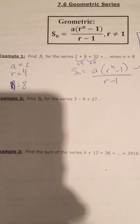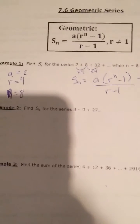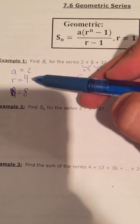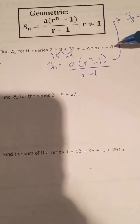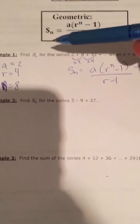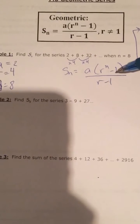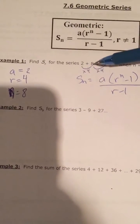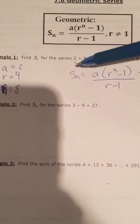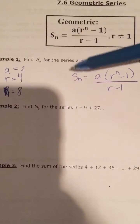Example 1 says find Sn for the series 2 plus 8 plus 32 plus so forth when n is 8. So the first number a is 2, r the common ratio is 4, and n the amount of terms we're adding together is 8. This is geometric because the common ratio is 4 — you multiply by 4 to get to the next number. It wouldn't be arithmetic because 2 plus 6 is 8, but add 6 again and it's not 32. It's multiplication.